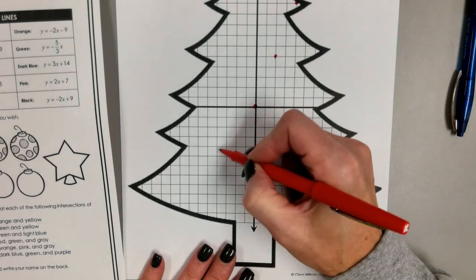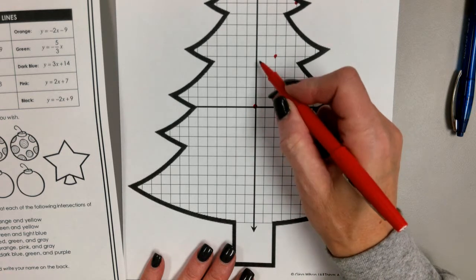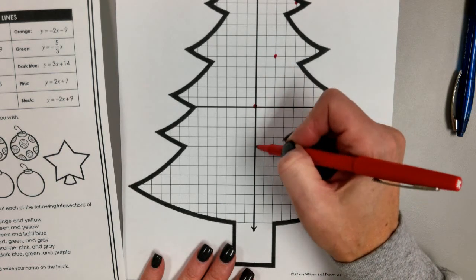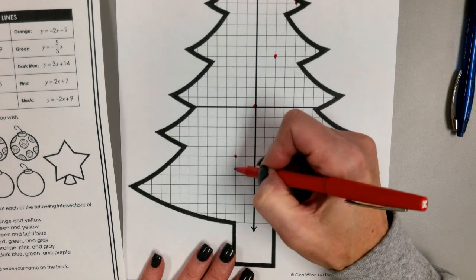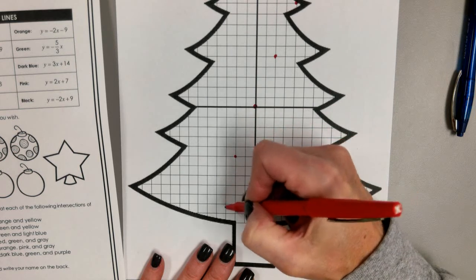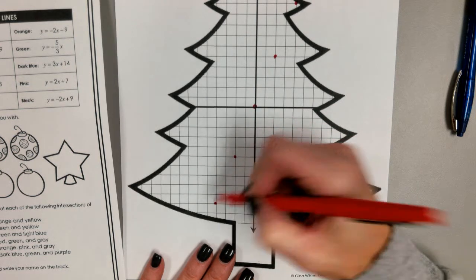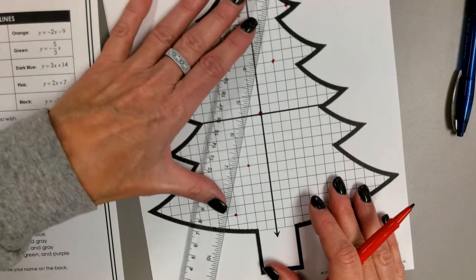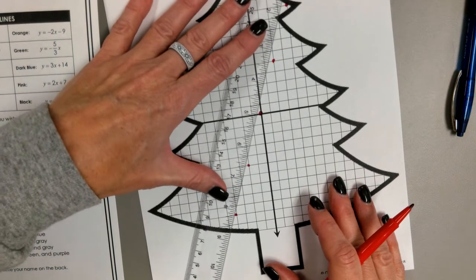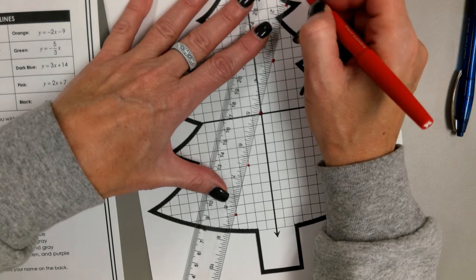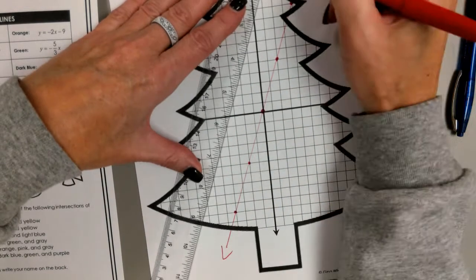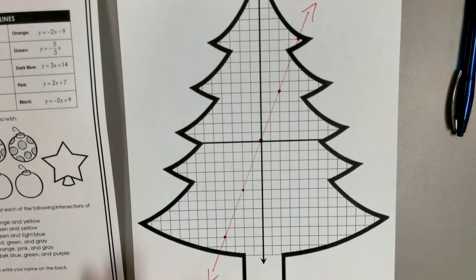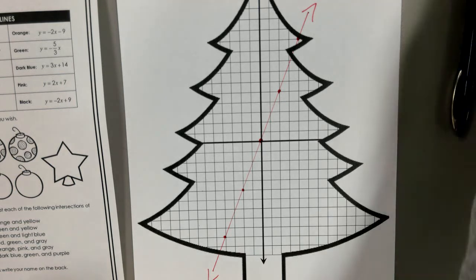And then I'm going to back up and go this direction. So instead of going up and to the right, I'm going to go down and to the left. Because when we draw a line, anytime we have our coordinate plane, we want to go from one edge to the other. So that should be what your red line looks like.